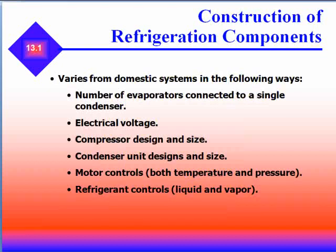We have to realize that construction of refrigeration components varies from domestic systems in the following ways. First, we might have a number of evaporators connected to a single condenser. We might have different electrical voltage, and our compressor design and size is going to be different. Condensing unit design and size is different, and motor controls — both temperature and pressure — are different.